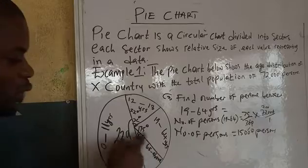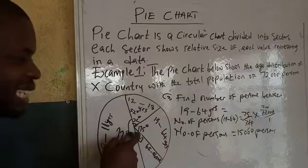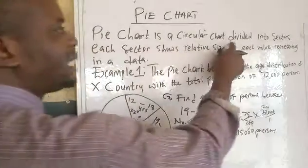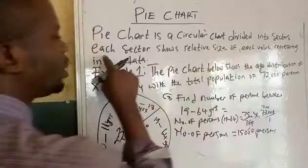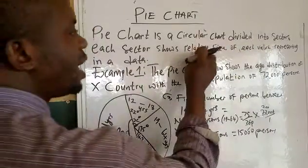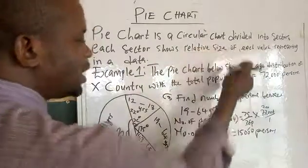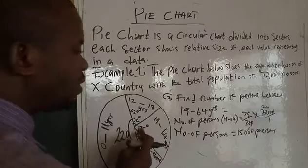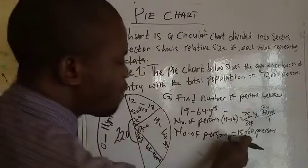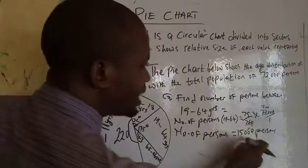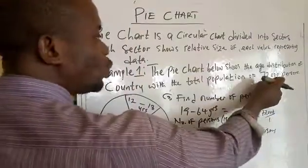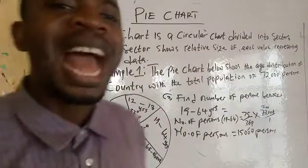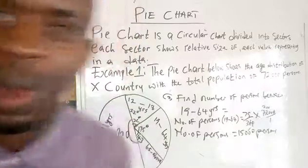So this 75 degrees is representing 15,000 persons. You can see — a pie chart is a circular chart divided into sectors, and each sector shows relative size. This 75° is the relative size of 15,000 persons out of a total population of 72,000 persons. Please subscribe and get more of our videos. Thank you.